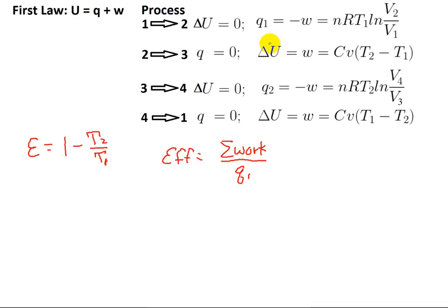Since CV times T2 minus T1 cancels out with CV times T1 minus T2, those being the same magnitude but of opposite signs...